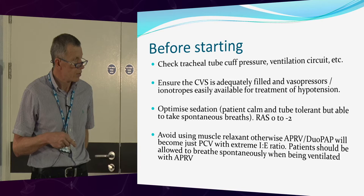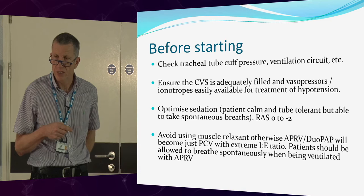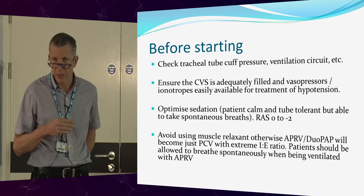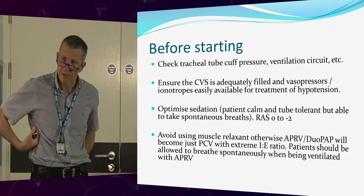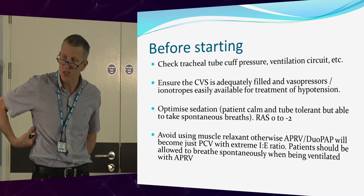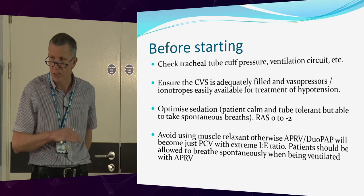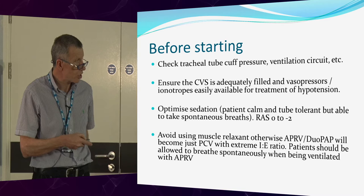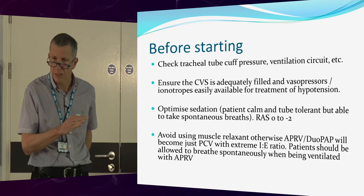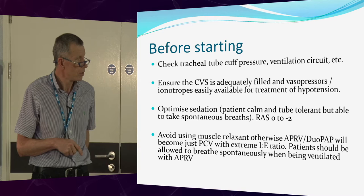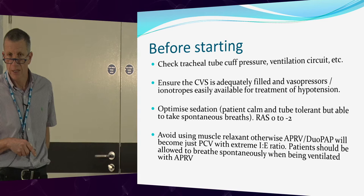Traditionally when somebody was really hypoxic we used to paralyse them, but in APRV we don't want them paralysed. The reason is we like to get some diaphragmatic movement, which really helps recruitment, oxygenation, and VQ matching in the bases of the lungs. What I usually try and do is get their respiratory rate to about 30, and that means you have to titrate the sedation. We're going for a RASS 0 to minus 2, and I try and get the nurses to titrate sedation to aim for a respiratory rate of around 30. So we avoid muscle relaxants.